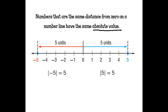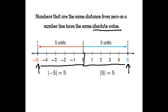If we have negative 5, it is 5 units from 0. Positive 5 is also 5 units from 0. That's why numbers that are the same distance from 0 have the same absolute value. Negative 5 and positive 5 are opposites, but they have the same absolute value.